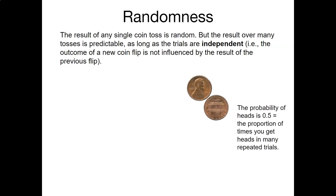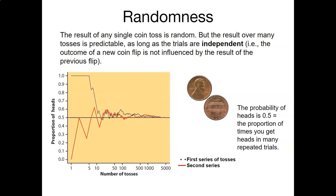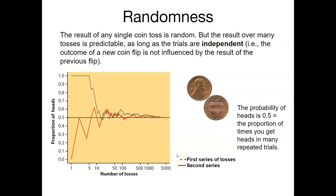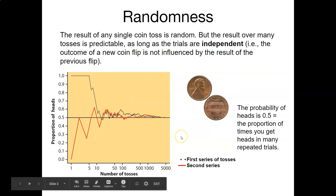Let's toss a coin. The probability of heads is 0.5. What if we did that over a number of repeated trials? That's what this graph shows on the left. We're looking at the number of tosses on the x-axis, and note that the x-axis is scaled in a logarithmic way so that we can see up to 5,000 tosses. On the y-axis is the proportion of heads.